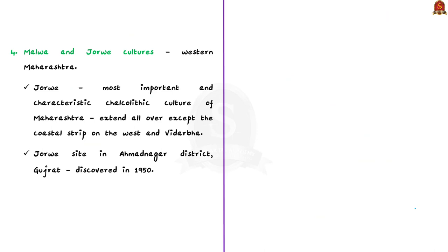The Jorwe culture is the most important and characteristic Chalcolithic culture of Maharashtra, extending almost all over the present state of Maharashtra except the coastal strip on the west and the Vidarbha region in the northeast. It is named after its type site Jorwe, situated in the Ahmednagar district. This culture was discovered in 1950.